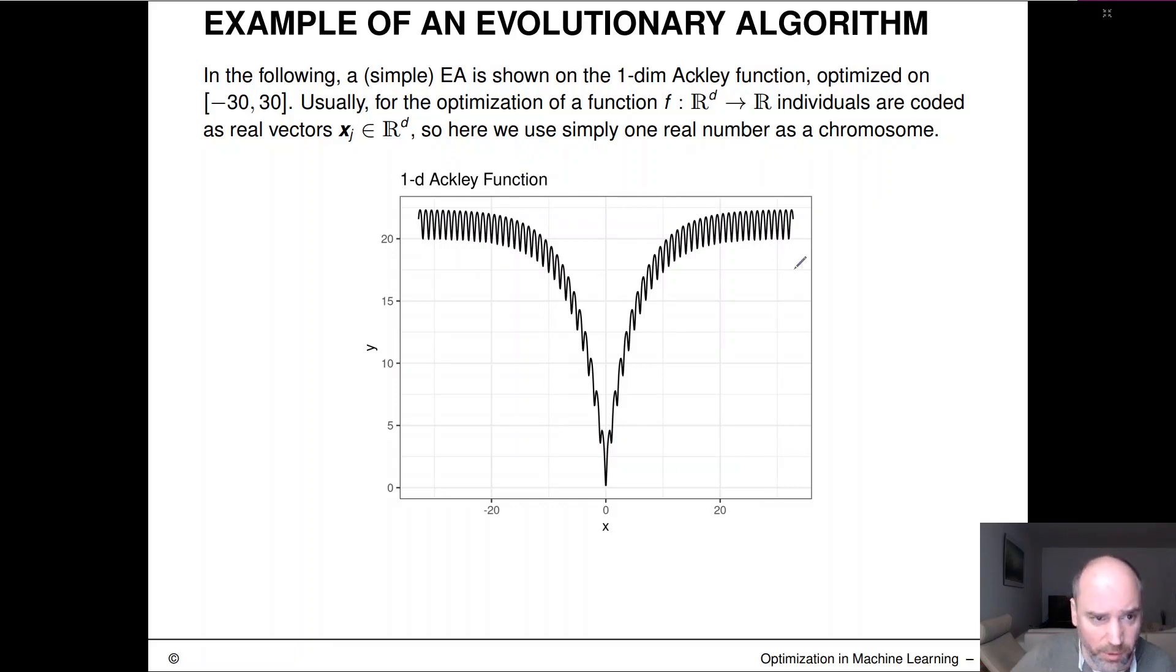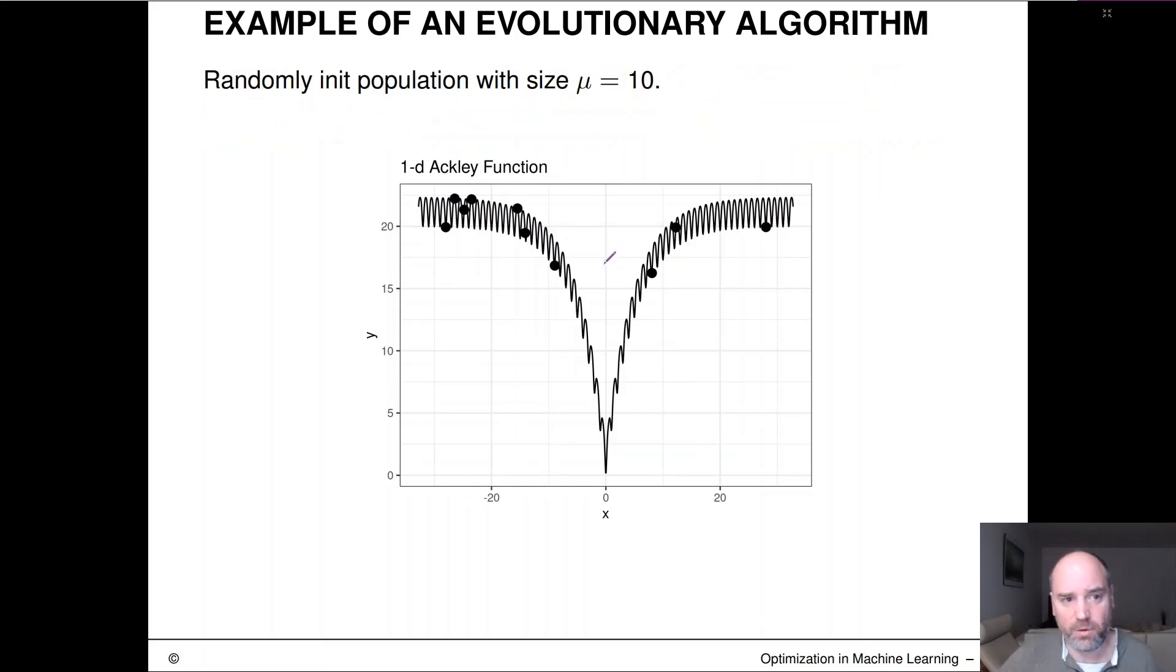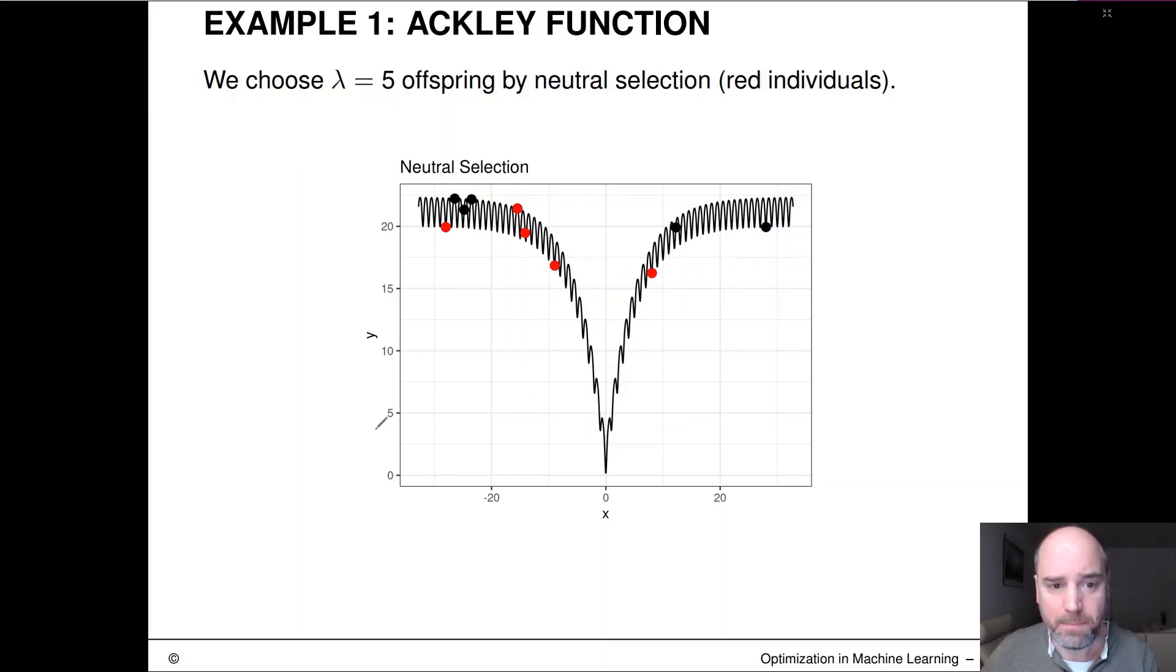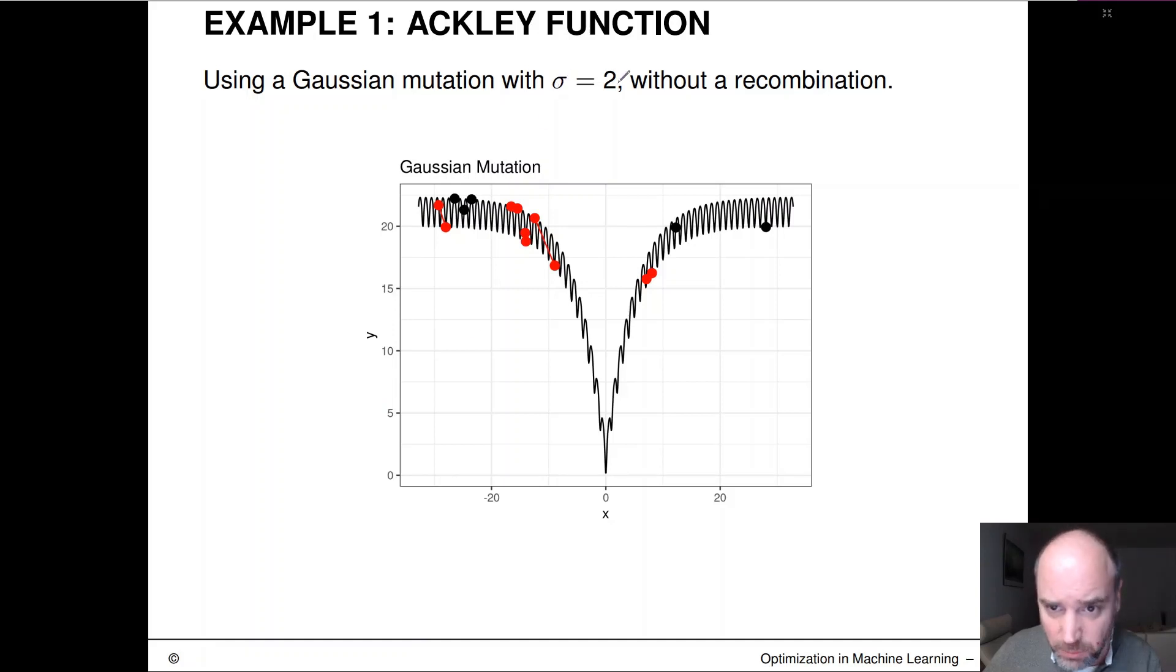And you can see a plot of this. We'll now initialize that with a population size of 10 guys. So these are the black dots here, just randomly chosen. And now we would create 5 offspring, in this case, without recombination. So we just take 5 of these guys and we mutate them with Gaussian mutation, with sigma equals 2, and create new values.